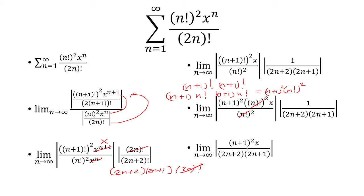Now I can bring everything together. So we have n plus 1 squared times x over 2n plus 2 times 2n plus 1.